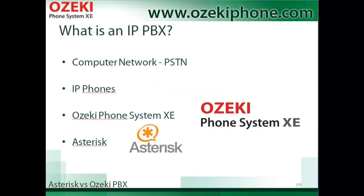What are Ozaki Phone System Axie and Asterisk? They are IP PBXs. An IP PBX connects IP phones of a company together and also connects these phones to the public switched telephone network. The IP phones are connected to the computer network, so the conversations run through the IP-based network. Ozaki Phone System Axie and Asterisk are two examples of IP PBX.